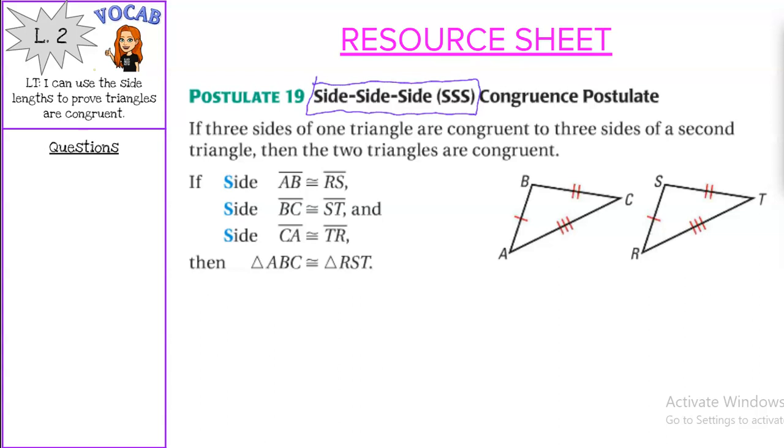So here we have side AB and side RS are congruent, side BC and side ST are congruent, and side CA and side TR are congruent.